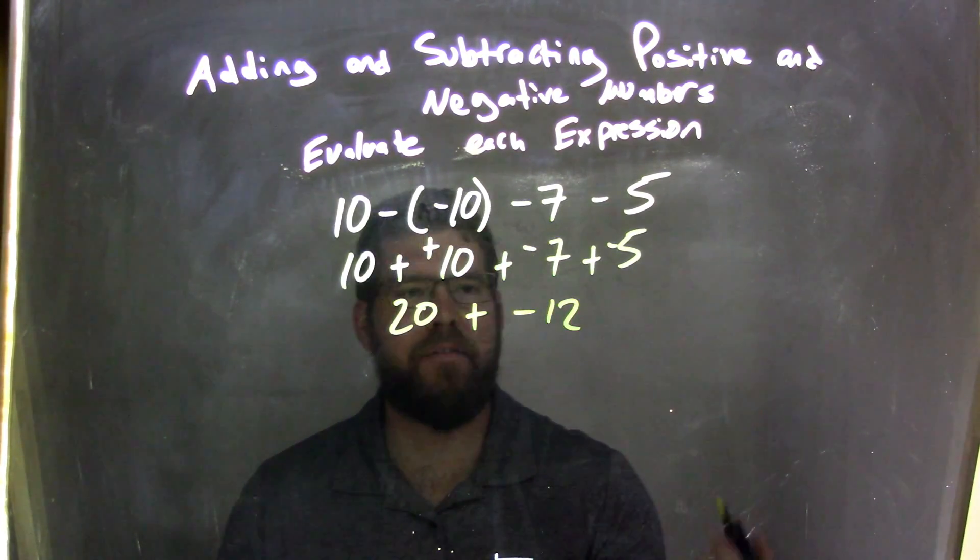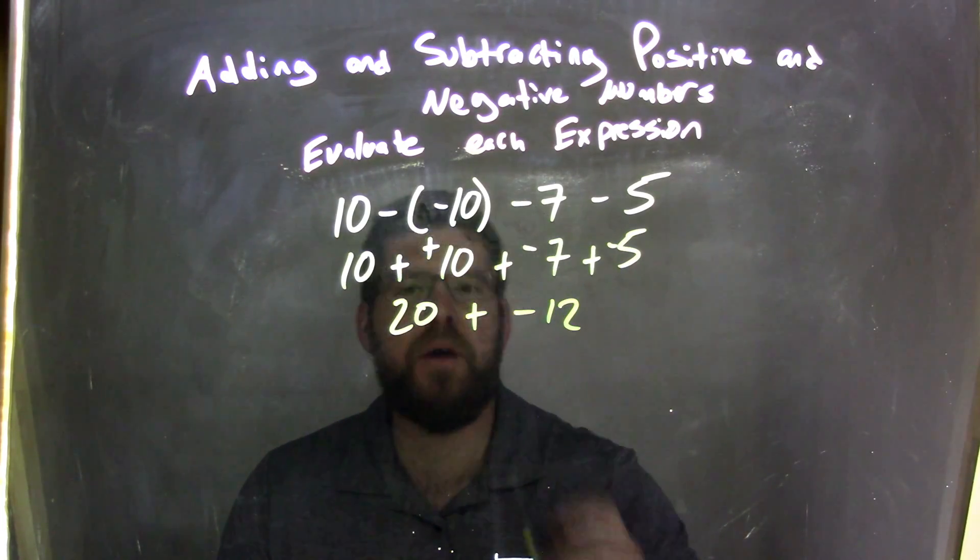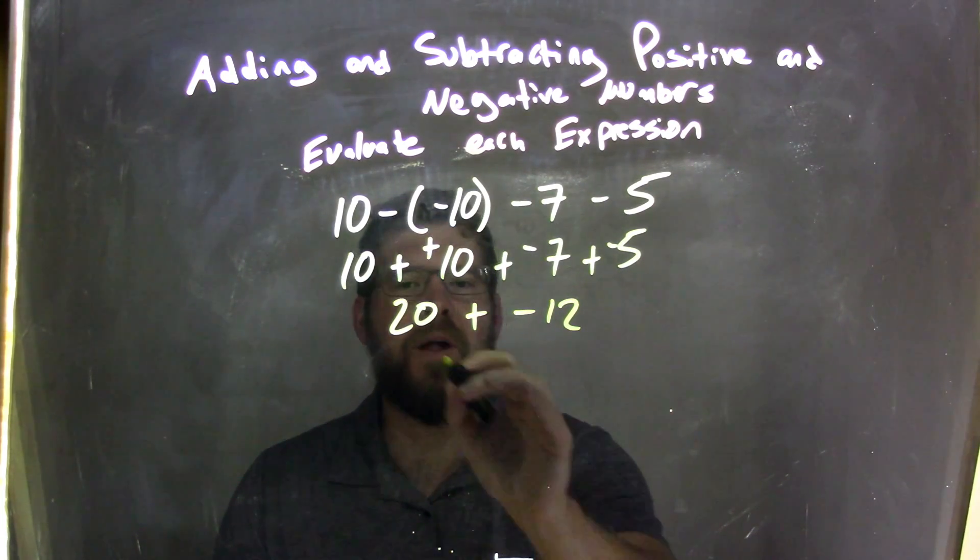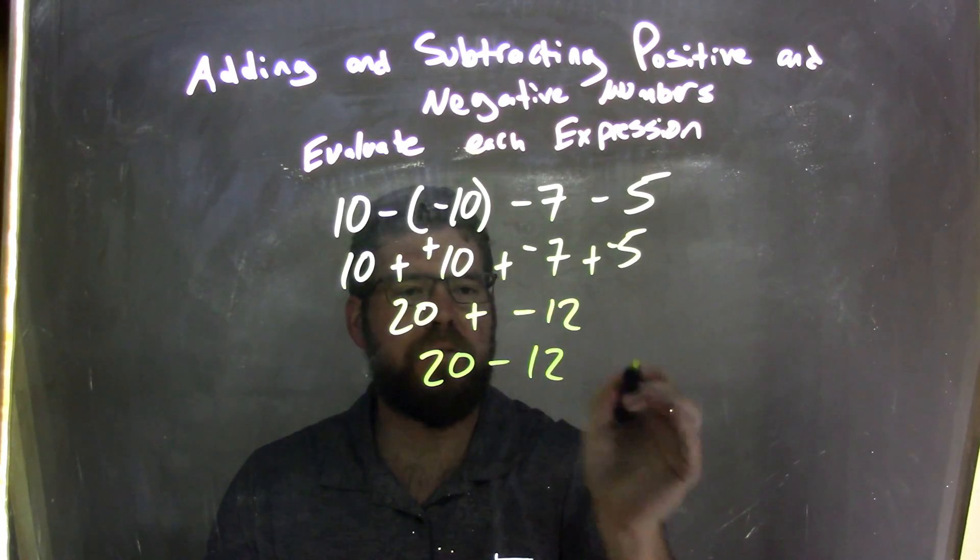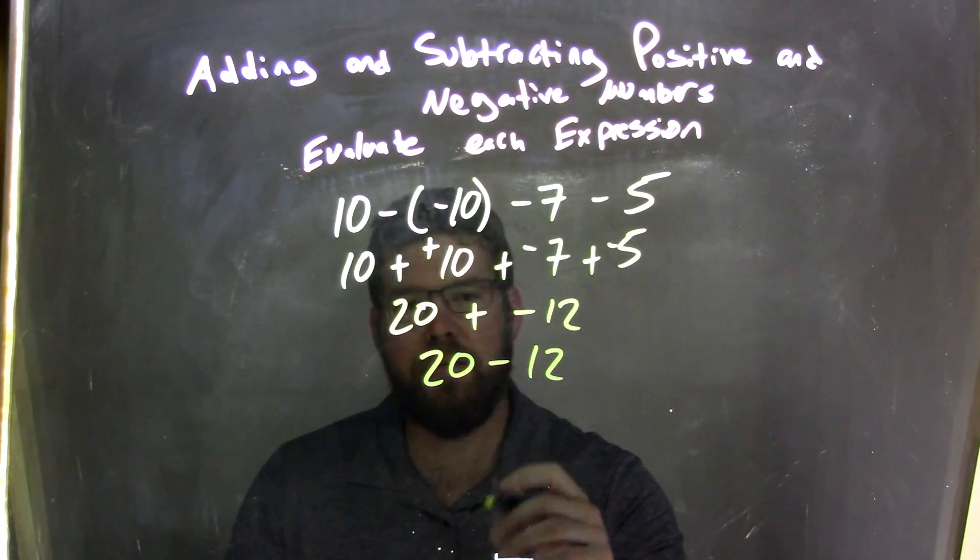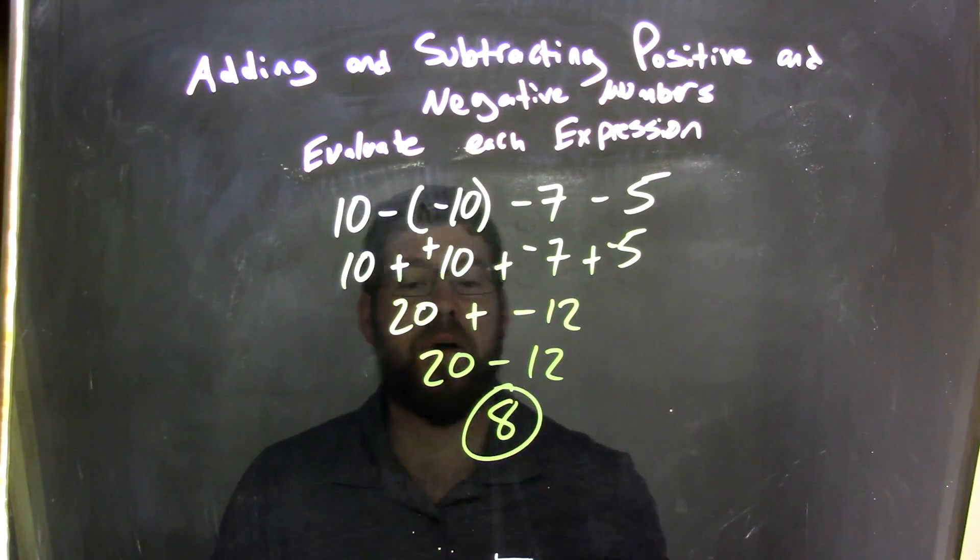7 plus 5 is 12, so negative 7 plus negative 5 is negative 12. Now we have 20 plus negative 12. That's the same as 20 minus 12, and 20 minus 12 comes out to be 8, which is our final answer.